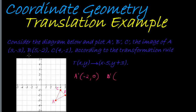B accent is 5 minus 5, which is 0, and -2 plus 3, which is 1. And then C accent, which is 4 minus 5, which is -1.